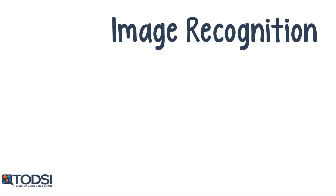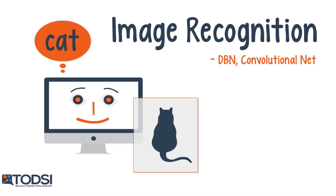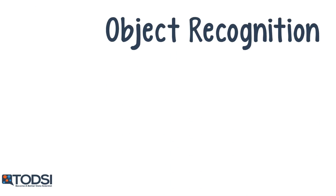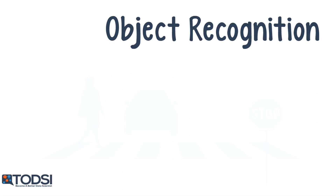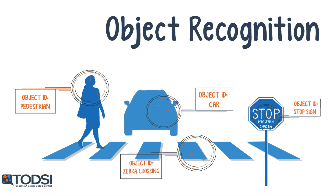For image recognition, use a deep belief network or a convolutional net. For object recognition, use a convolutional net or an RNTN.